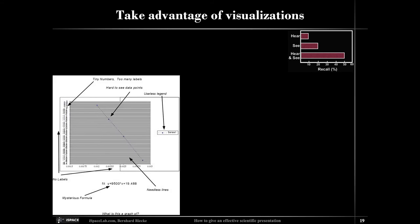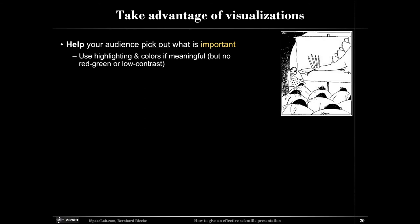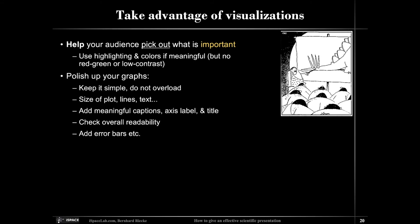Here's a particularly bad example — lots of tiny numbers, unreadable text, nothing really pops out. There's a slightly better version of that, but again there's just too much text and it's hard to pick out the key aspect. Having some kind of summary sentence on slides is useful. You can use all kinds of highlighting colors, but be aware that many people are red-green deficient, and on a projection screen the contrast might be quite low. If you have data plots, keep them simple, don't overload them, make sure key aspects stick out. Be aware of the size of plots and fonts, have meaningful captions that are ideally self-explanatory, and check for overall readability. Add error bars if you want to be taken seriously in quantitative research. Avoid useless gimmicks like 3D plots if nothing is really 3D.